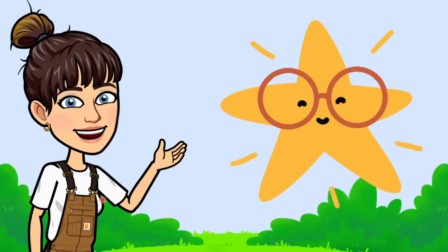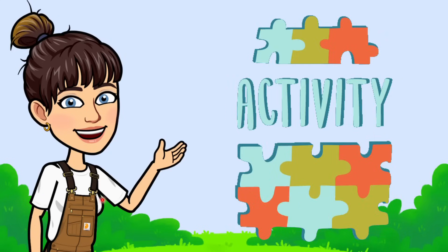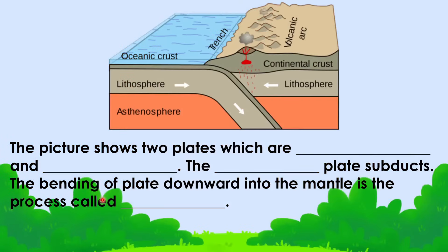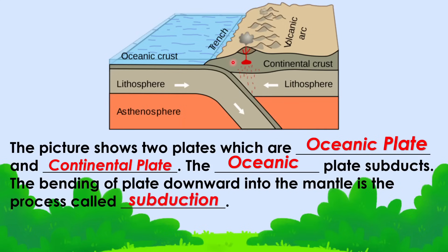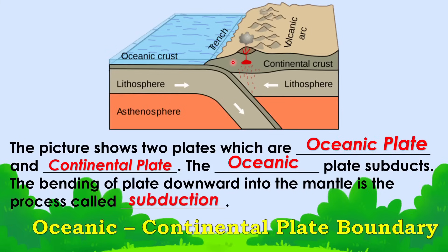Let's have another activity. Help me complete this paragraph with the correct term. The picture shows two plates: an oceanic plate and a continental plate. The oceanic plate subducts, and the bending of the plate downward into the mantle is the process called subduction. This type of convergent boundary is called oceanic-continental plate boundary.